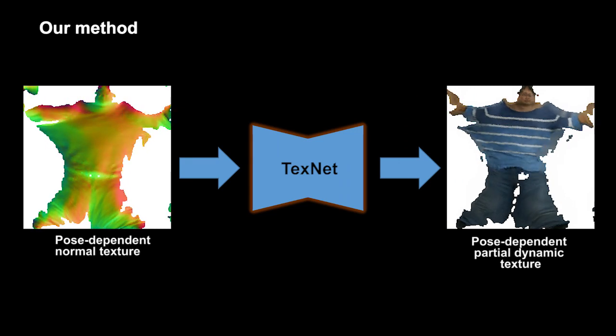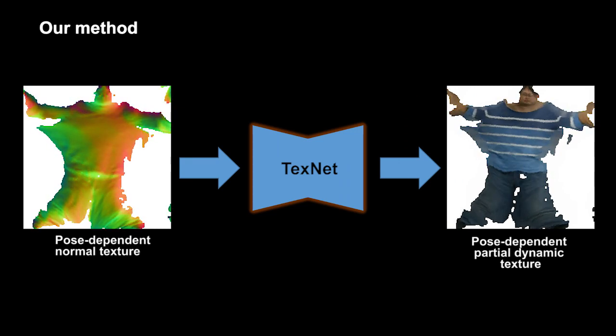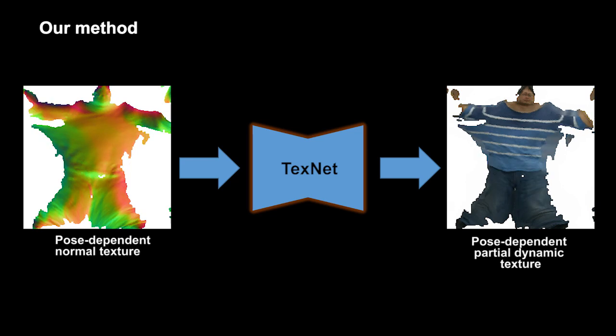Then, we train our first network, TexNet, to synthesize pose-dependent partial dynamic texture.